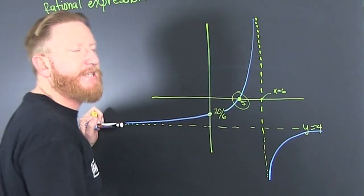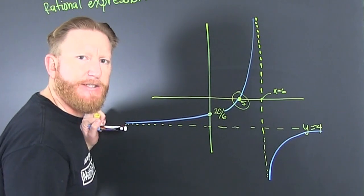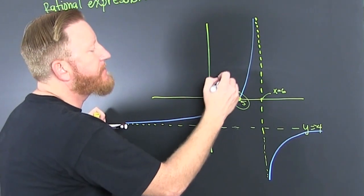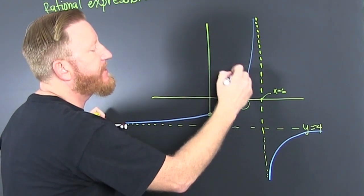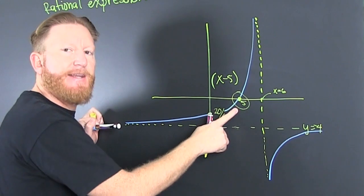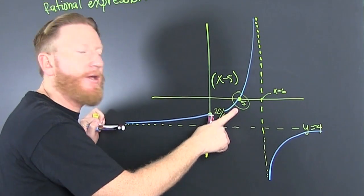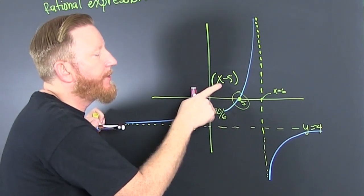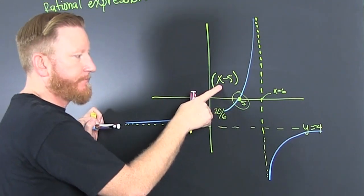If that's a zero, then what's a factor? x minus 5 is a factor, and where does that happen? That happens in the numerator because it's a zero of the function.